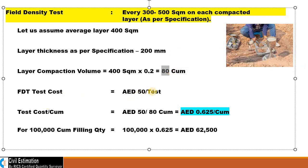The FDT test cost is AED 50 per test. So what is the test cost per cubic meter? AED 50 divided by the total layer quantity of 80 cubic meters equals 0.625 AED per cubic meter.